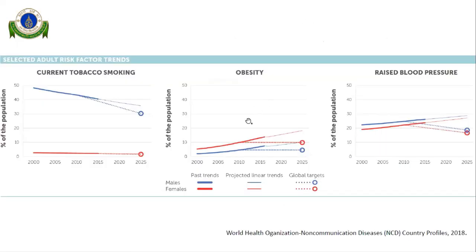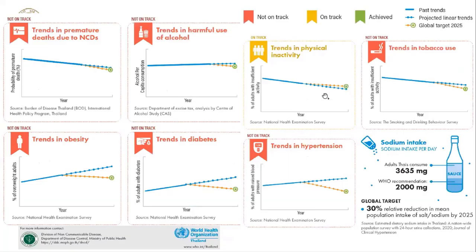Looking at risk factors — even though the prevalence of smoking is declining for the Thai population, the projection shows it is not going to achieve the target. For obesity, as well as diabetes, they will be shown in the next slide. For hypertension, the numbers are going up. Alcohol consumption is also not on track. Obesity, diabetes, and hypertension are all increasing.